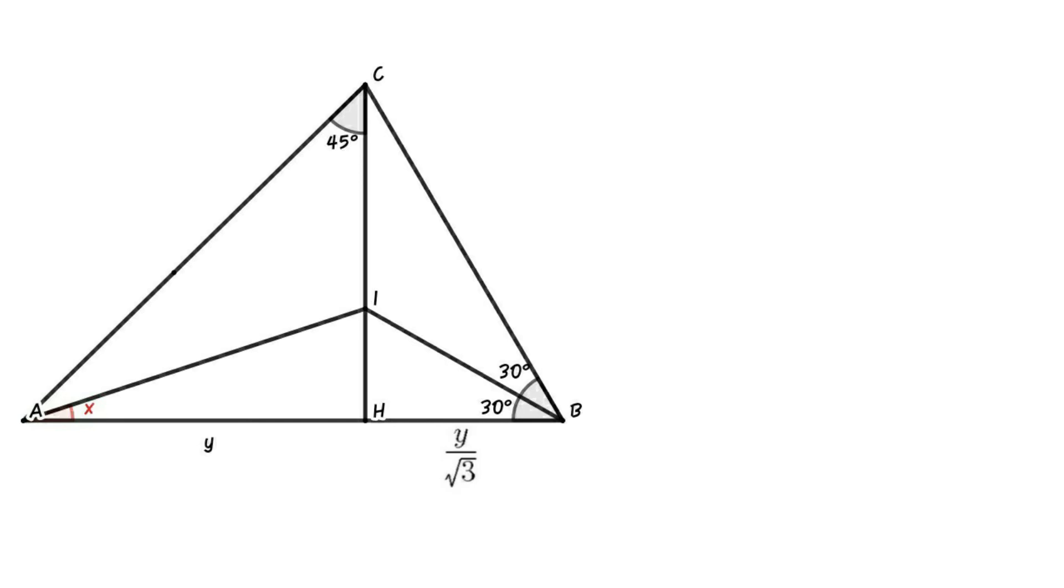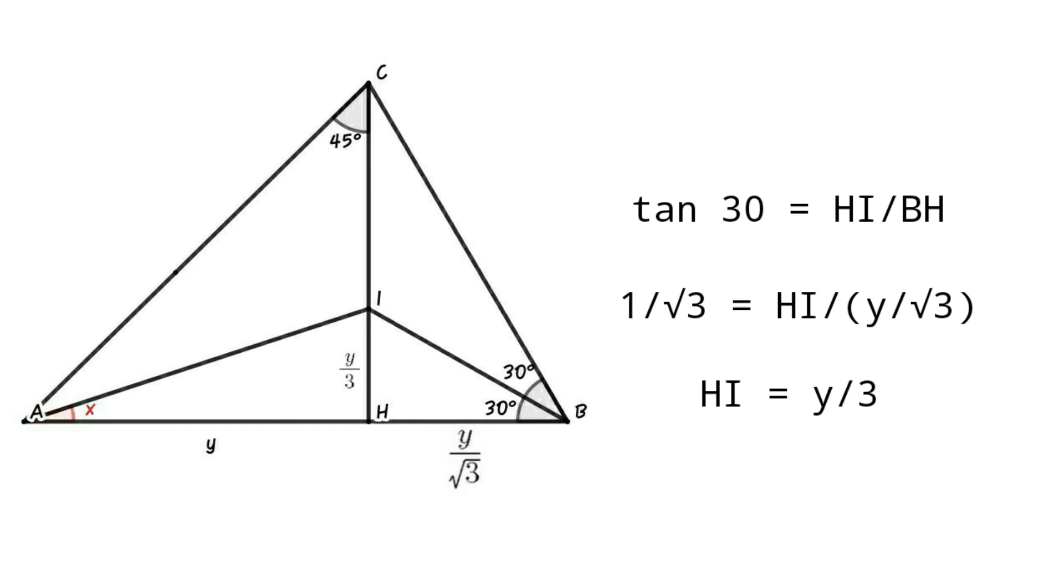Consider triangle BIH. Then tan 30 equals HI over BH. That is, 1 over root 3 equals HI over y over root 3, or HI equals y over 3.